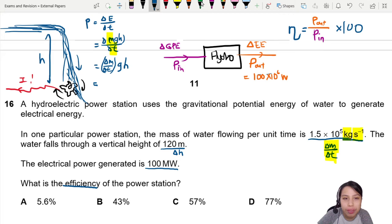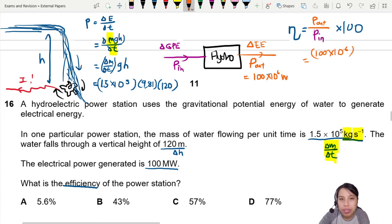Okay. So let's plug in all the values now. So here will give us 1.5 times 10 to the 5 kg per second. Times 9.81 times 120 meters. Okay. Press, press, press, press all the values. I guess you could plug it all inside here at one go. Here, sure. Let me do that for you. So output, we have 100 times 10 to the 6 divided by input from GPE. This will be 1.5 times 10 to the 5 times 9.81 and 120.